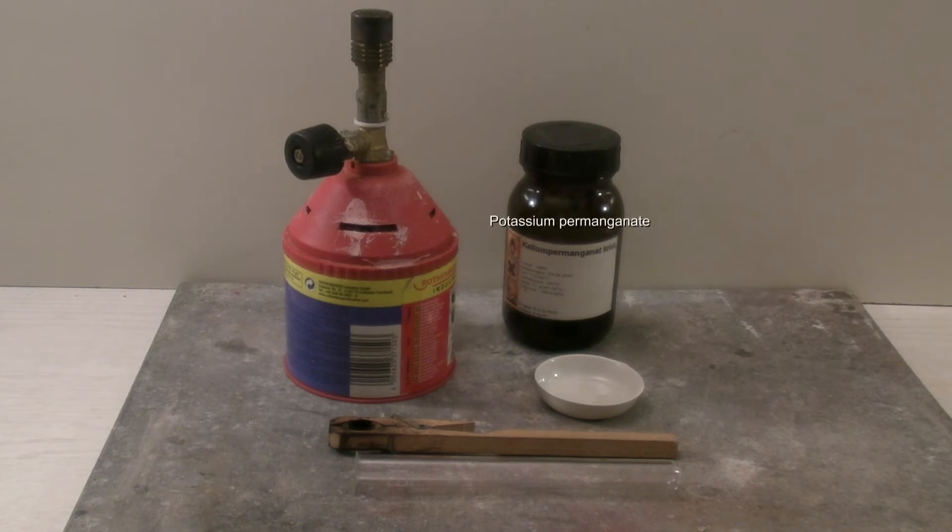For the test, the following is needed: a Bunsen burner, a test tube, a test tube holder, and a porcelain dish or a small beaker. The use of potassium permanganate is optional.